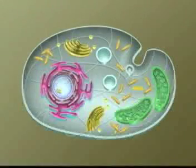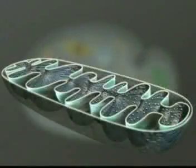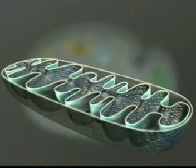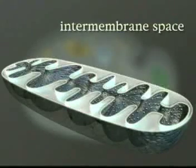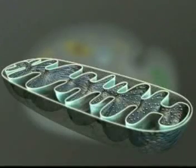Most of a eukaryotic cell's ATP synthesis occurs in mitochondria. A mitochondrion is a sac within a sac. The inner sac is folded, increasing surface area for ATP synthesis. Between the inner and outer membranes is the intermembrane space, a reservoir for hydrogen ions used for synthesizing ATP from ADP.